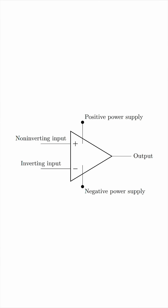An OPAMP has a non-inverting input, an inverting input, and an output which is limited by a positive and negative power supply.